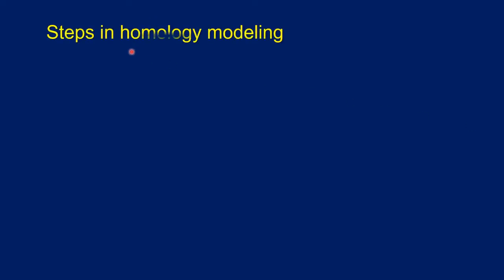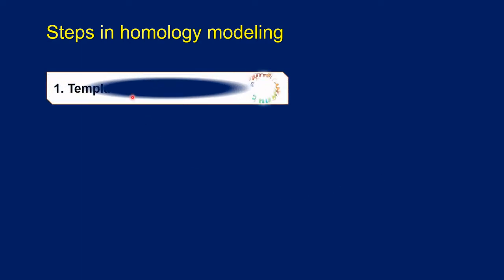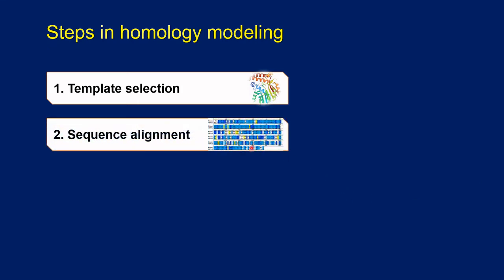What are the different steps in homology modeling? The first step is template selection. We take the target protein, that is the protein without the 3D structure, and we compare it to different databases like the BLAST database. We identify a template which is having a sequence identity of more than 30 percent, and we do the sequence alignment. The target sequence and the template sequence are aligned.